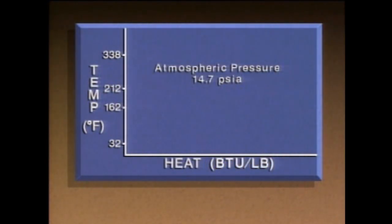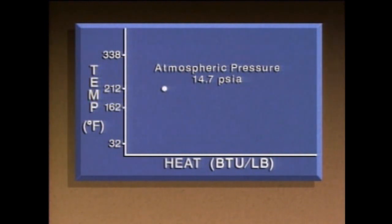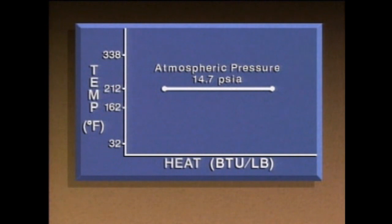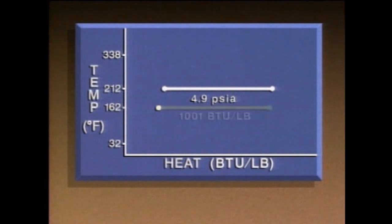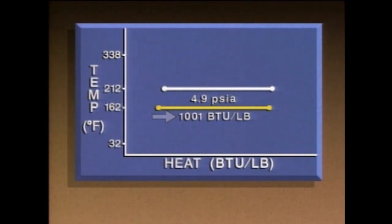Atmospheric pressure is 14.7 PSIA. At atmospheric pressure, water starts boiling at 212 degrees Fahrenheit. On our graph, this is the point at which water first starts boiling, and this is the point at which all the water is boiled into steam. This line represents the latent heat of vaporization. For one pound of water at atmospheric pressure, it takes about 970 BTUs of heat to boil all the water into steam. At a pressure of 4.9 PSIA, a pound of water boils at 162 degrees, and the latent heat of vaporization is around 1,001 BTUs per pound. So when the pressure is reduced, water boils at a lower temperature, but it takes more heat to boil all the water into steam.